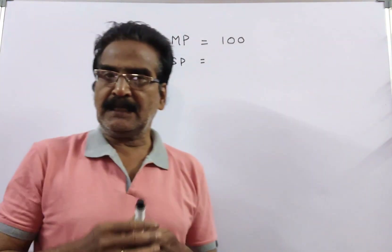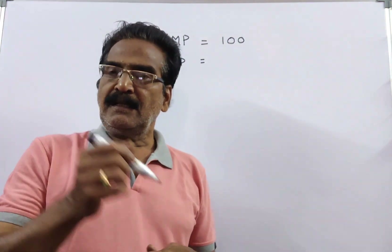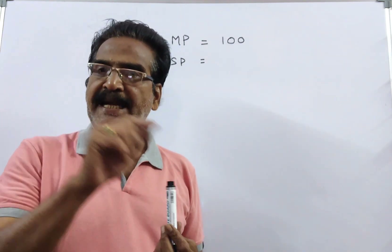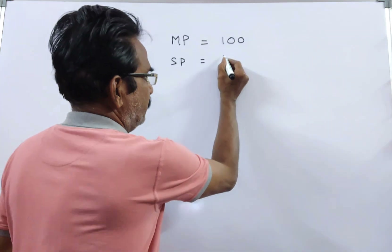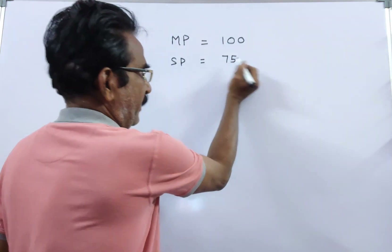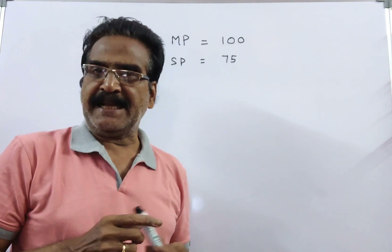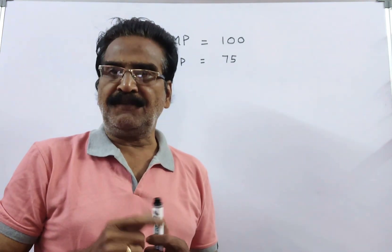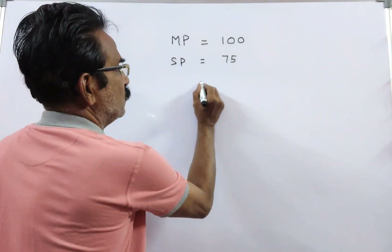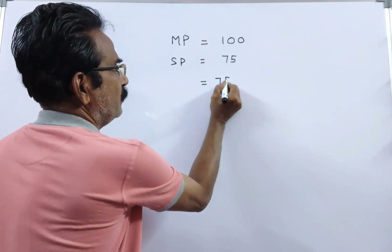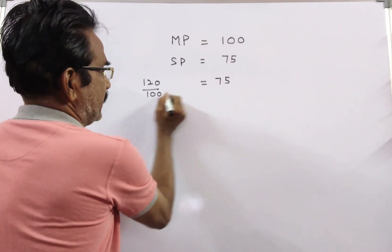Friends, say the marked price of the article is 100 rupees. This article is sold at a discount of 25%, so the sold price becomes 75. If this article is sold at this price, he is getting a profit of 20%. That means this sold price of 75 is 120% of the cost price.